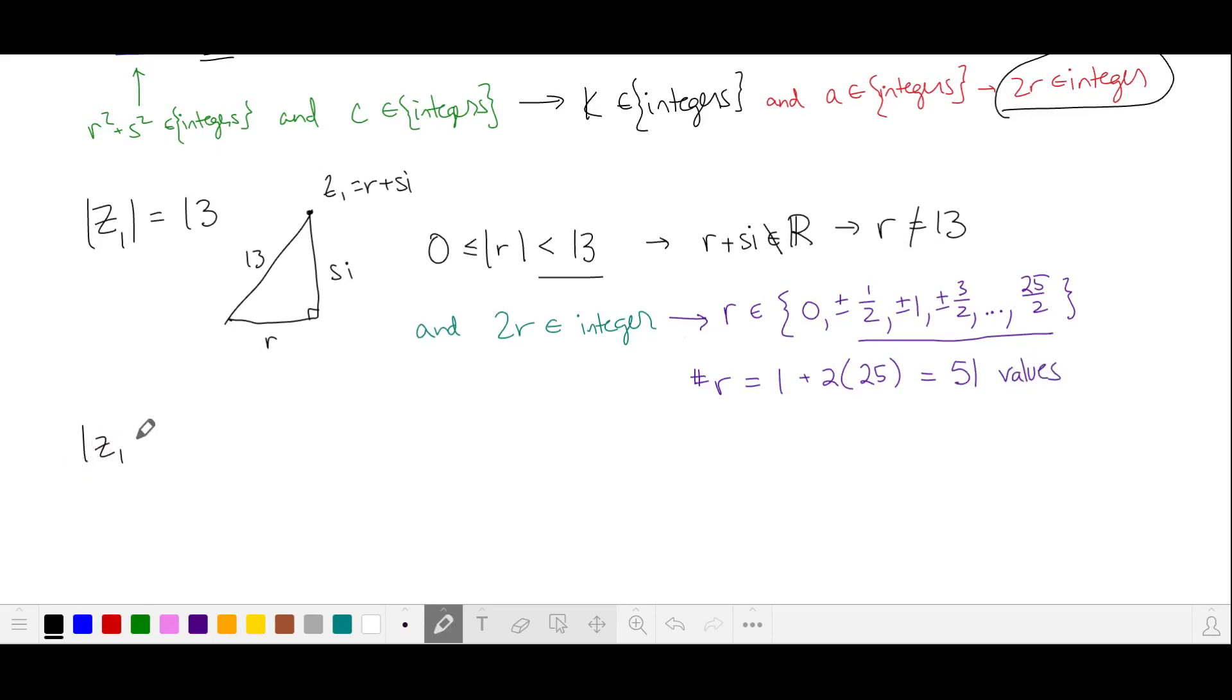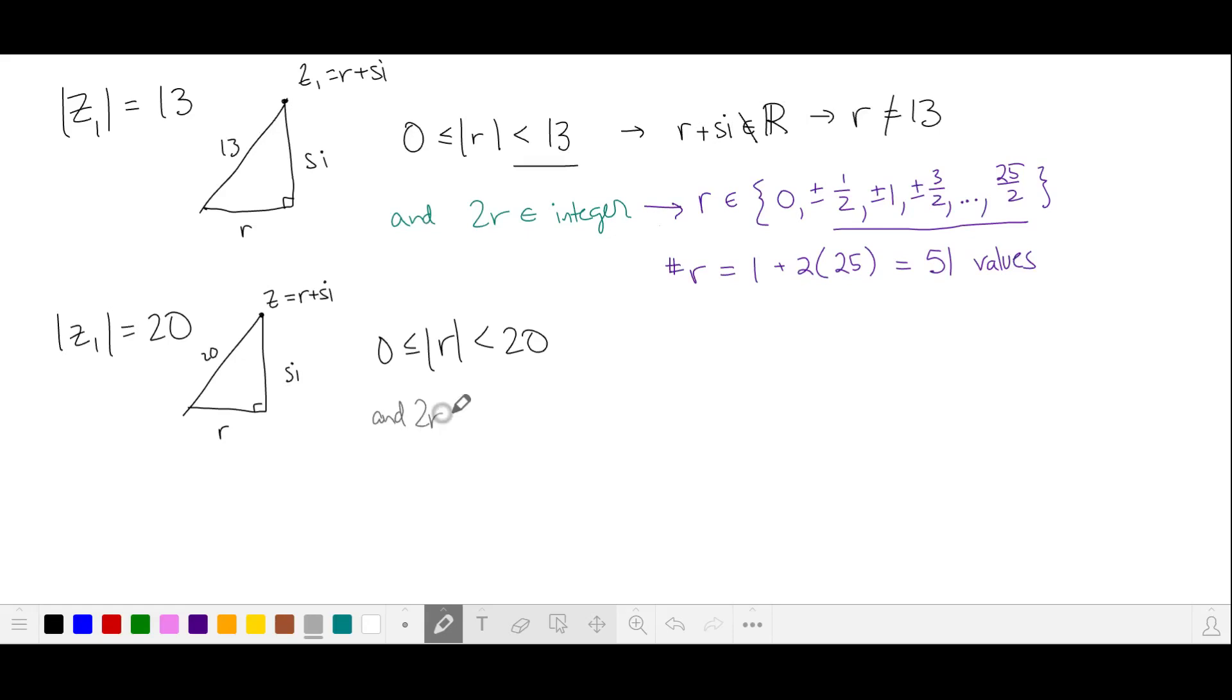We can also have our complex numbers with a magnitude of 20. This means r is less than 20. And 2r is an integer. So r includes 0 and all of these fractions plus or minus with a 2 in the denominator. And our largest value is just less than 40 halves or 20. So it's 39 halves. And the size of this set, we have a 0, and then we have in pairs plus or minus 39 fractions, which gives us 79 solutions for r.